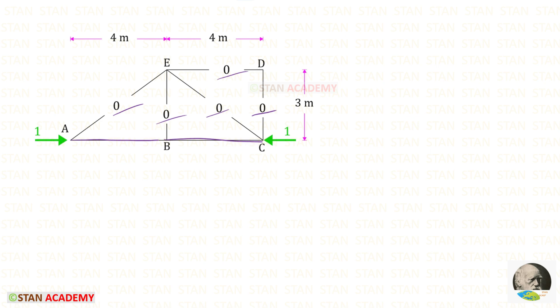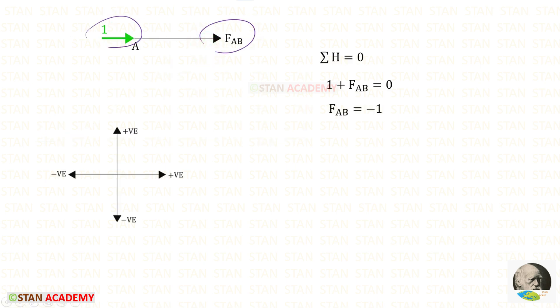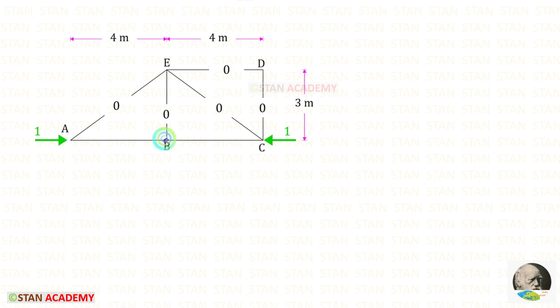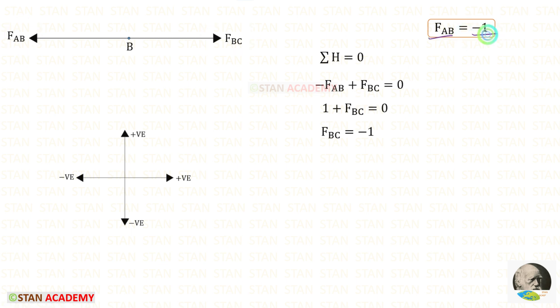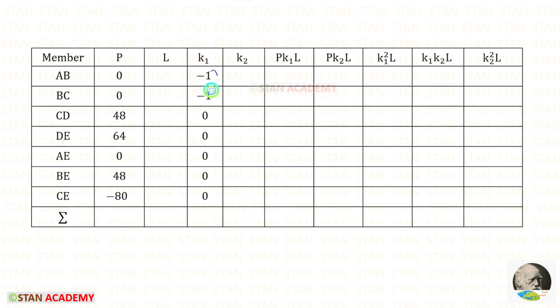If you want to know how to find zero-force members easily, the link to that video is in the description. Taking joint A and finding the member force in AB: both forces acting right are positive, so FAB = −1. Taking joint B and finding the member force in BC: the force from AB (−1) acts left, and the unit load acts right. Minus times minus becomes positive, so FBC = −1. Let us enter all the K1 values.